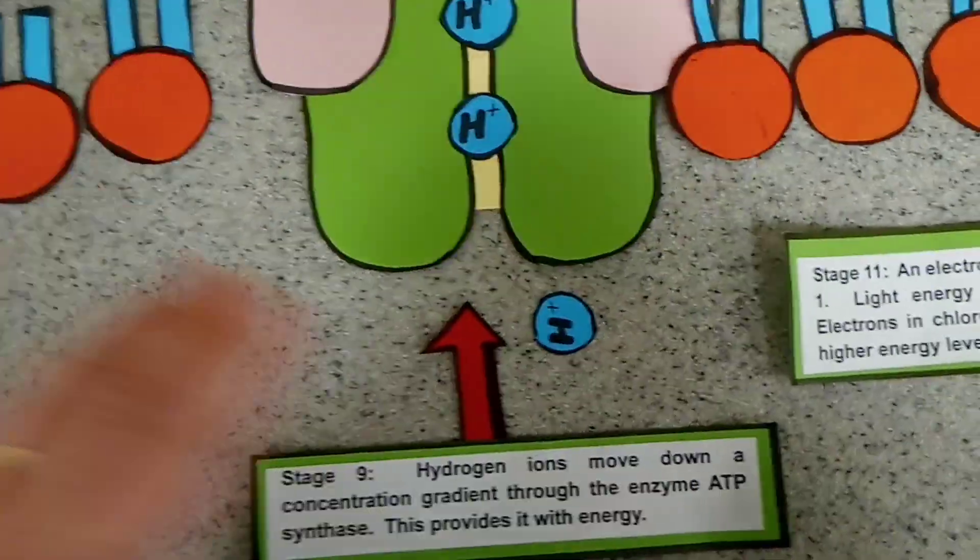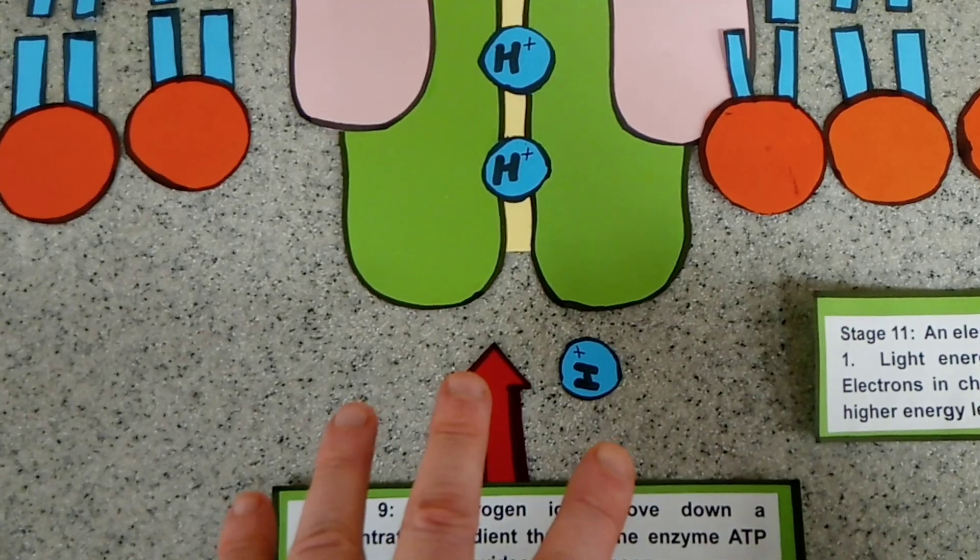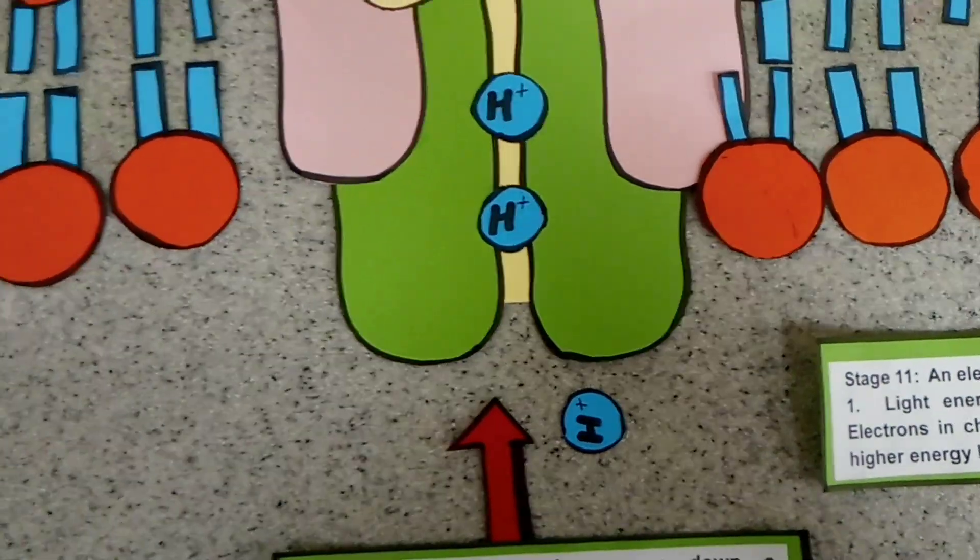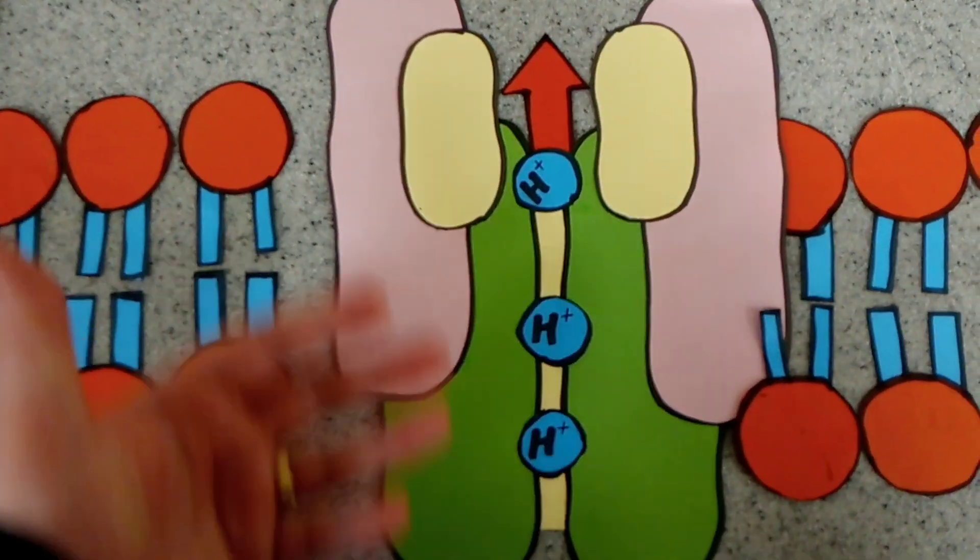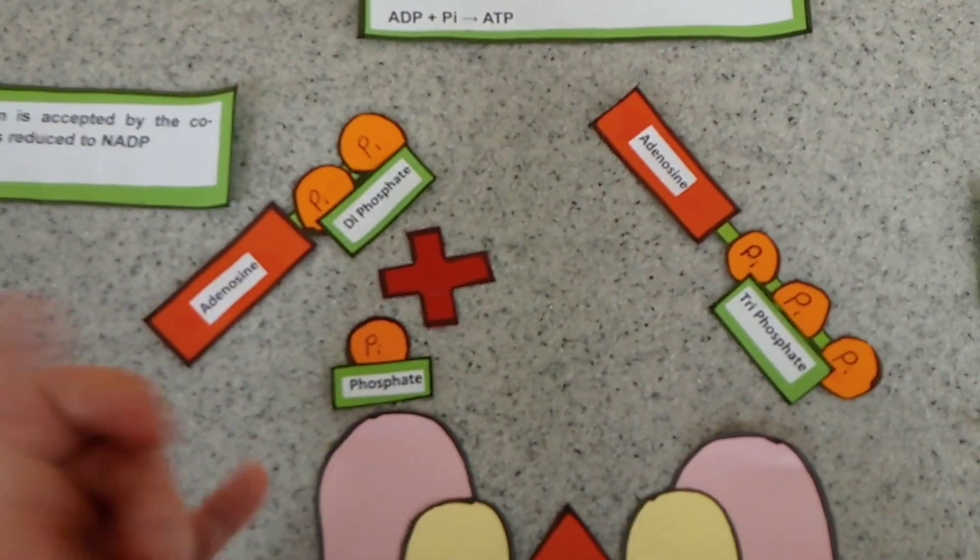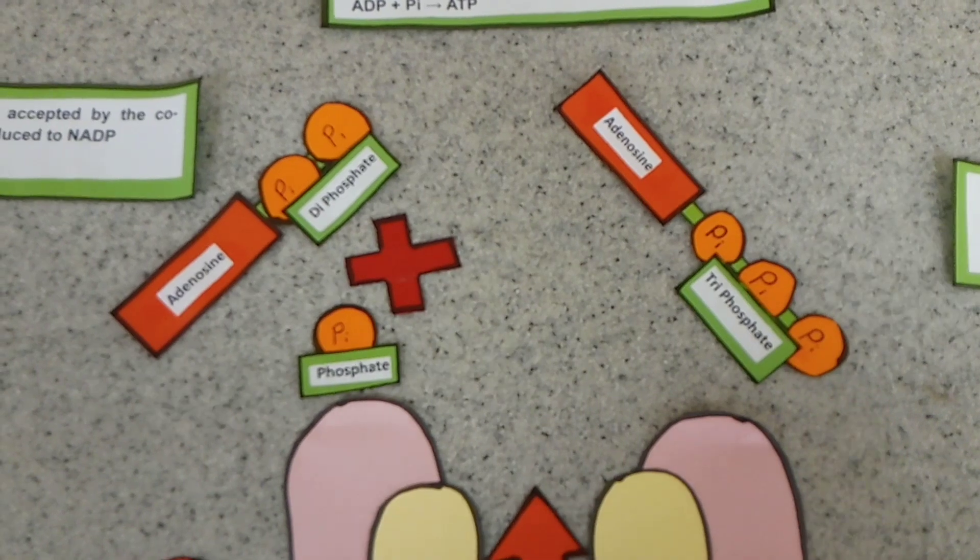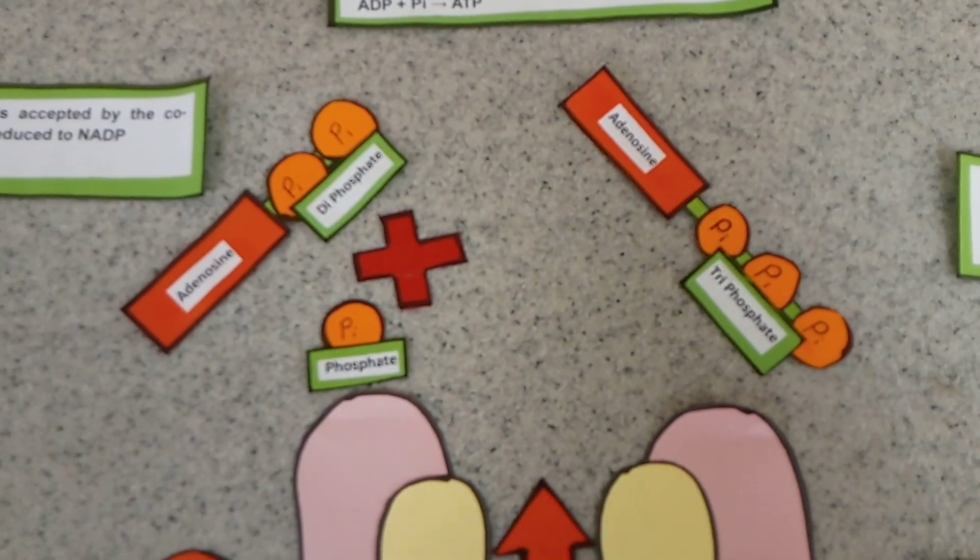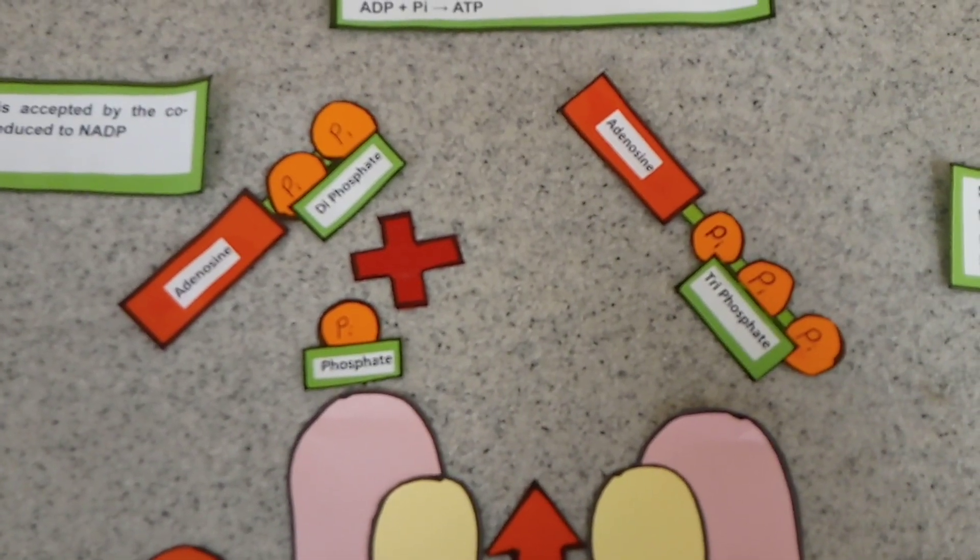Because we've built up a high concentration of hydrogen ions in the lumen, they can then pass out through ATP synthase, which will combine ADP with an inorganic phosphate to make ATP. So all of that is the non-cyclic form of light-dependent photosynthesis.